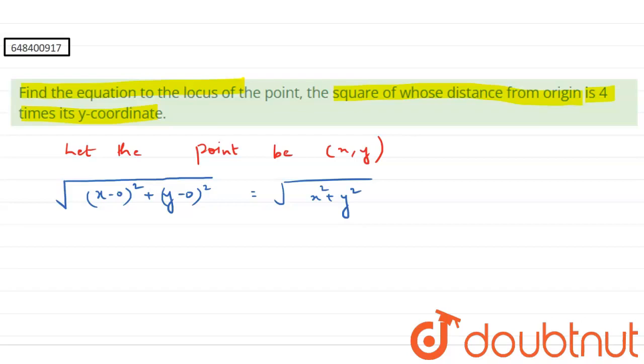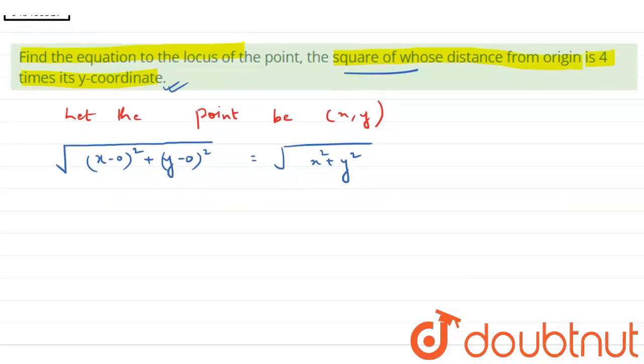Now, this distance, if we square it, that is 4 times its y coordinate. So, we have been given that if we square the distance from origin, this is 4 times its y coordinate.